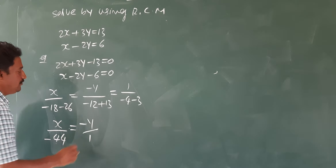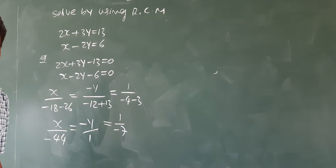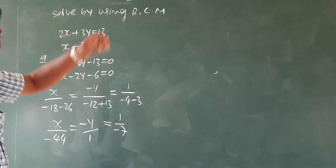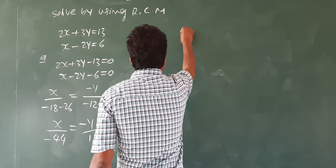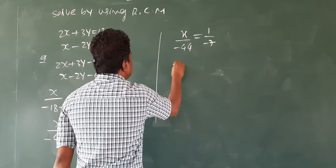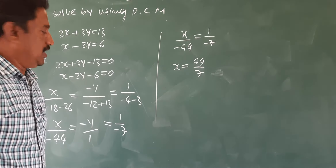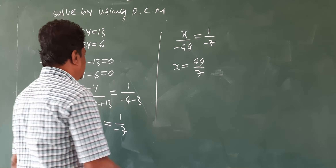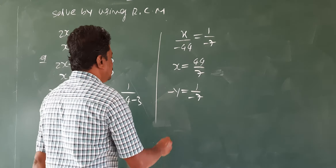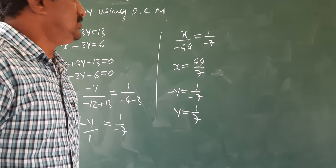So: x by — minus 18 plus 26 gives 38, but checking: minus 20 plus 10 is 30, and this gives minus 44. For minus y: minus 4. For 1 by: minus 7. To get x value, take first and last: x by minus 44 equals 1 by minus 7, so x is equal to minus 44 divided by minus 7, giving positive value. For y value, consider second and last: y equals 1 by 7. We got both x and y values.